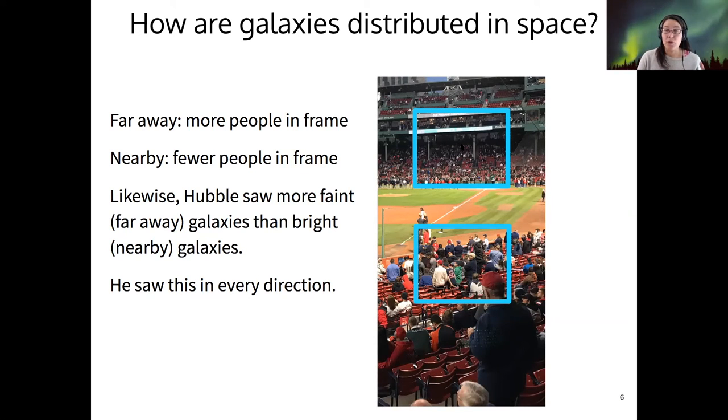And so we see many faint people and fewer bright people in our analogy here. Hubble was in the same position when he started to map out the locations of galaxies. And what's more, he saw this pattern repeat itself everywhere he looked in the sky.